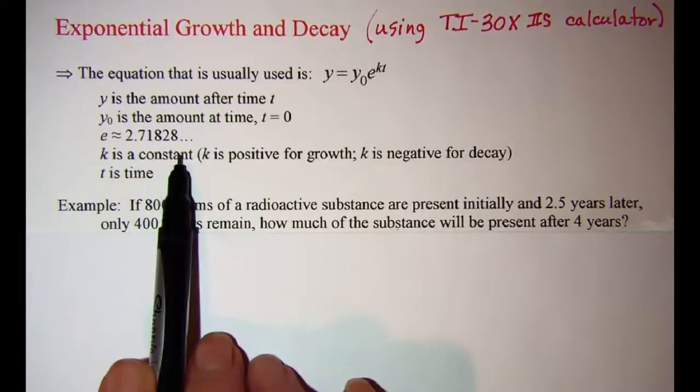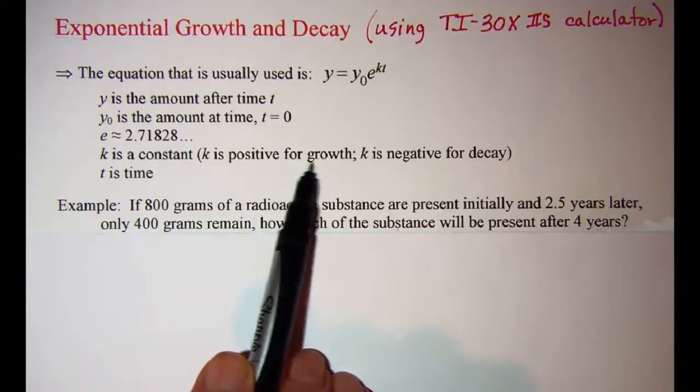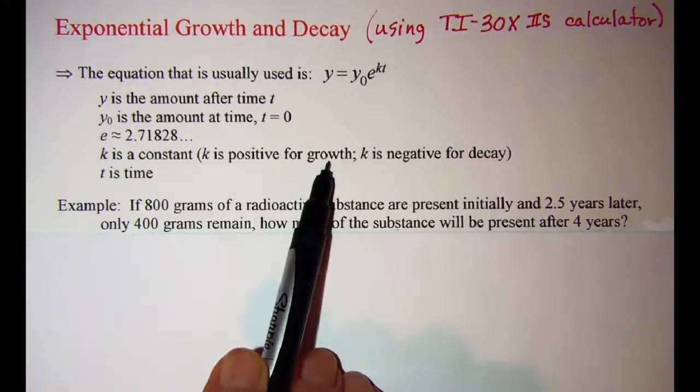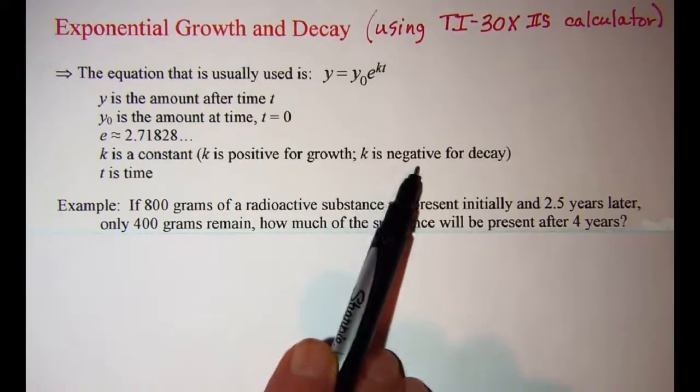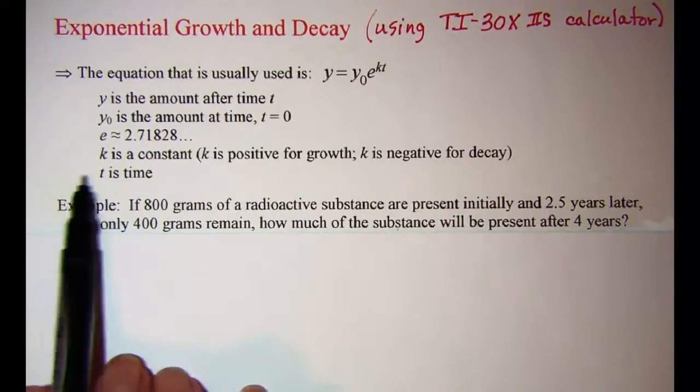k is a constant of growth or decay. If k is a positive number then we're dealing with growth. If k is a negative number then we're dealing with decay. And t is time.